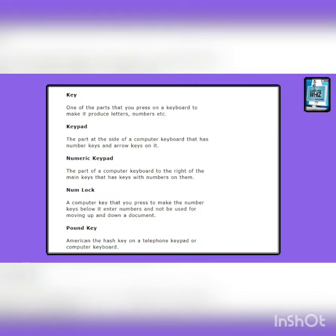Keypad: the part at the side of a computer keyboard that has number keys and arrow keys on it. Numeric keypad: the part of a computer keyboard to the right of the main keys that has keys with numbers on them. Num lock: a computer key that you press to make the number keys below it enter numbers and not be used for moving up and down a document.